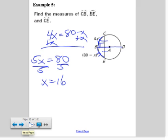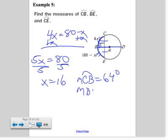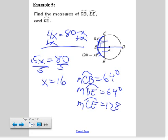Find the measure of CB: 4 times 16, so the measure of arc CB equals 64 degrees. The measure of arc BE has to be the same, so it's also 64 degrees. Finally, the measure of arc CE - the whole entire arc would be 128.